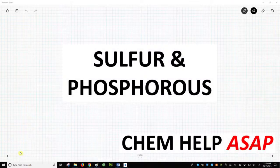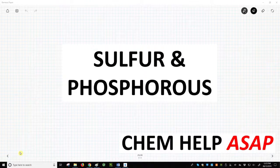Hello from Chem Help ASAP. Let's talk about how the third row elements, sulfur and phosphorus, are incorporated in functional groups.